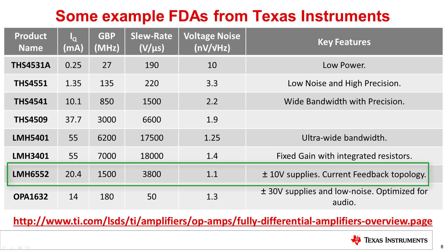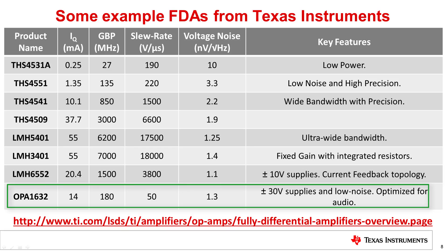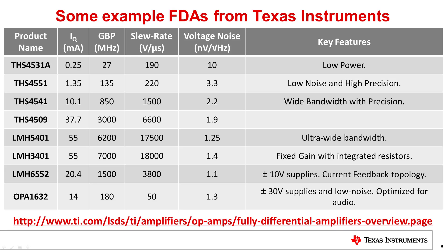The LMH6552 is a fully differential amplifier built using a current feedback topology. One of the main advantages of the current feedback topology is its gain bandwidth product independence, so the LMH6552 can be configured in high gains without sacrificing bandwidth. The OPA1632 is a very low noise, high voltage, fully differential amplifier that is very popular in audio applications, and may be used as an ADC driver or as a pre-amplifier between audio DACs and Class D amplifiers. The devices shown are a subset of TI's broad portfolio — check the TI amplifier portal for the latest offerings.